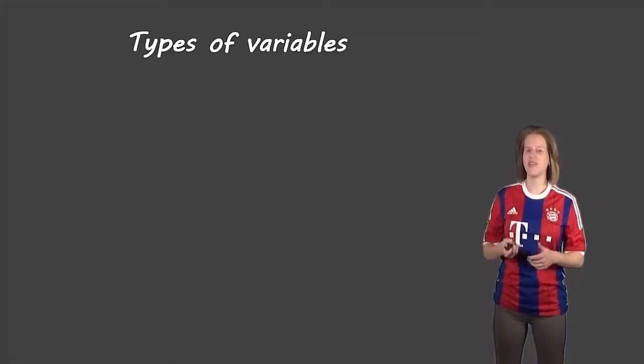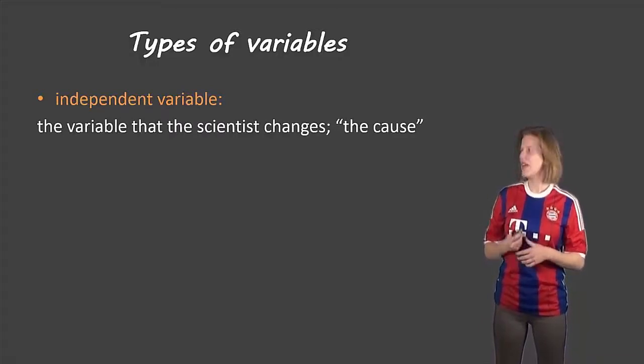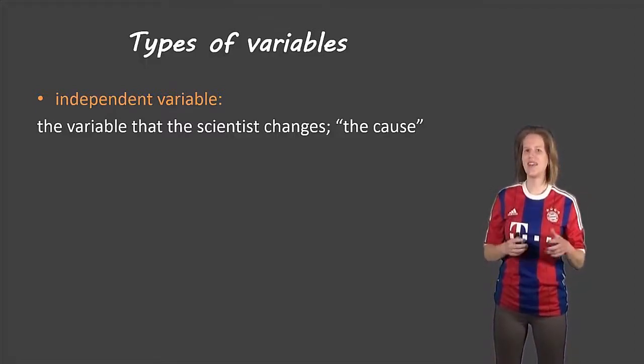So there are a few different types of variables. The first one is called an independent variable and this is the one that the scientist changes or the one that you will be changing and sometimes it's known as the cause.